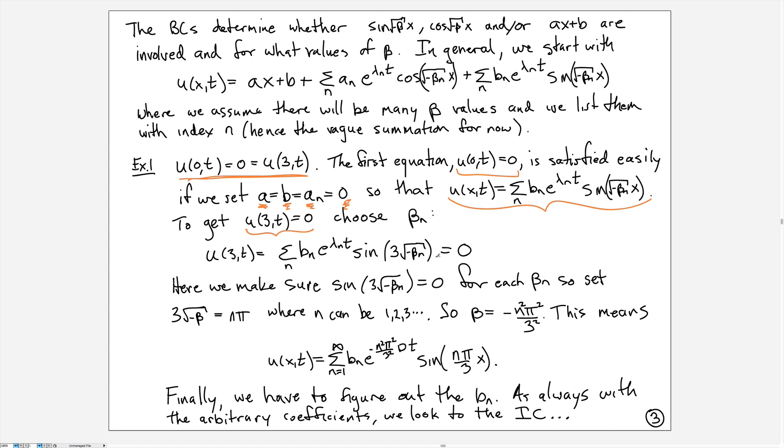u(3) has to equal zero. When we add up all of these trig functions multiplied by exponentials, we want to make sure they're zero. The only way to do that is to ensure that the sine function evaluates to zero. That means that 3√(-β) has to be a multiple of π, where n can be one, two, three, and so on to infinity. We can solve that for β, and we get β values of -n²π²/3².